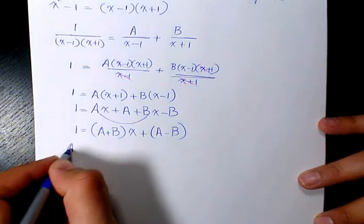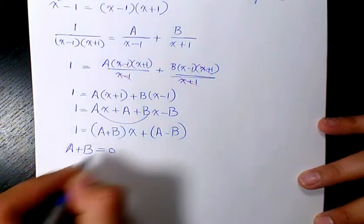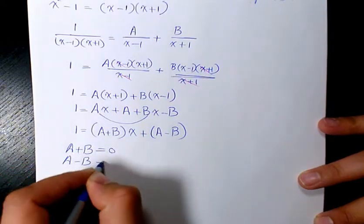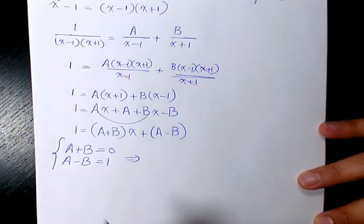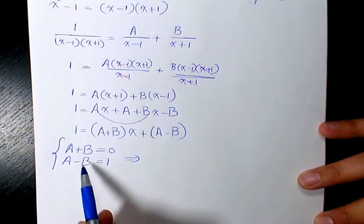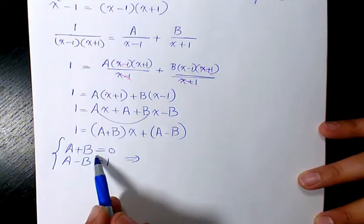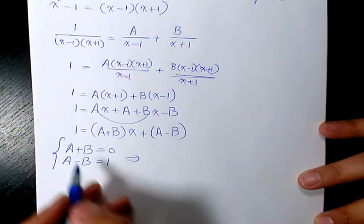So A plus B is 0 and A minus B is 1. So we have two equations, two unknowns. We need to find out the value of A and B using the system of linear equations, which is very simple in this case. Just when you add these two, we can cancel these two.